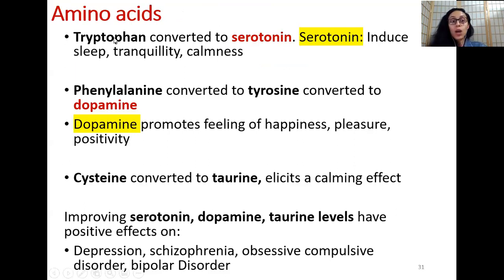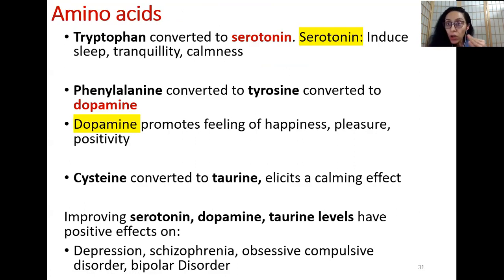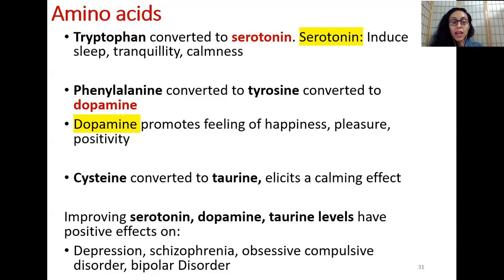Moving to amino acids: tryptophan is converted to serotonin in the body; phenylalanine is converted to tyrosine, which is converted to dopamine; and cysteine is converted to taurine. At the end, serotonin, dopamine, and taurine help in improving your mood and reducing symptoms of depression, schizophrenia, obsessive-compulsive disorder, and bipolar disorder — all because of these neurotransmitters. Serotonin and dopamine are direct neurotransmitters — your happy hormones — and taurine, though a non-essential amino acid, can also elicit a very calming and happy effect.